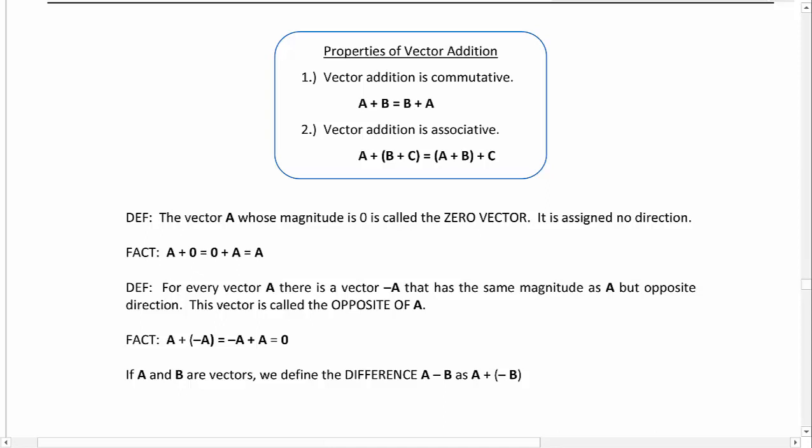The vector whose magnitude is zero is called the zero vector. It's assigned no direction since it has no magnitude, no length, it's not going anywhere, so it doesn't have a direction. It is a fact that if you take a vector and add the zero vector to it, you get that same vector back. That's just like our additive identity for adding real numbers. If you add zero to a number, it doesn't make a difference.